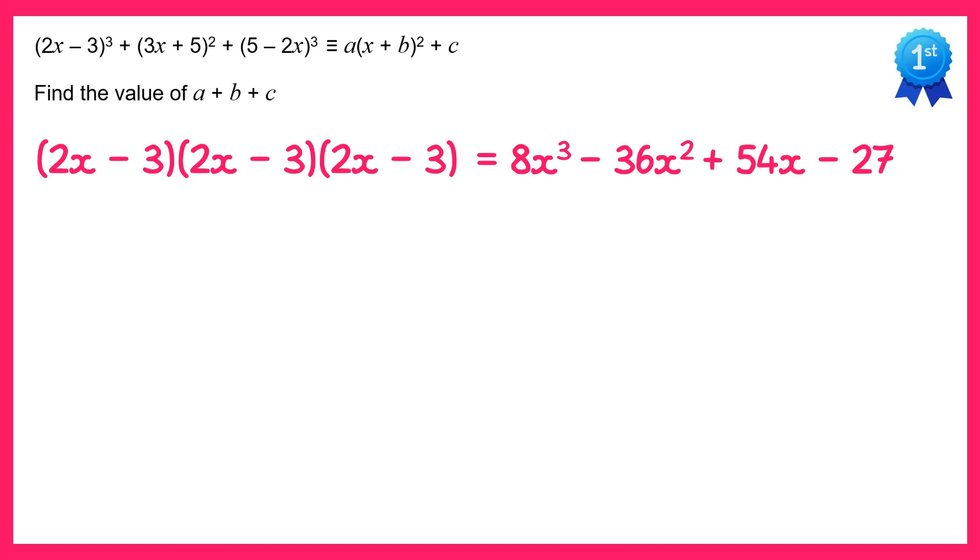Next we have 3x plus 5 all squared, so that's the same bracket multiplied by itself, 3x plus 5 times 3x plus 5. If you expand those brackets you'll get this.